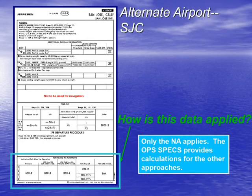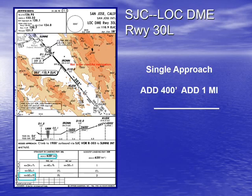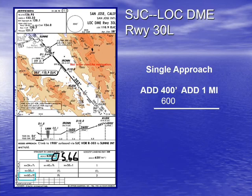We're looking at San Jose, California. Here is the rule: if we have a single approach for an airport into a single runway, we take our MDA above the ground and our visibility, and we add 400 feet to our level-off altitude for the approach and one mile to our visibility requirement. In this example, this value is 566 — and we round that up to 600. To that 600, we're going to add 400 feet, which comes from the table shown a few slides ago and is printed in the OPSPEC at the airline.